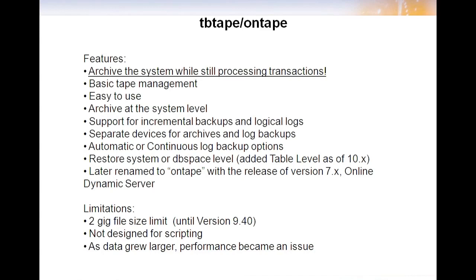The biggest limitations of TBTape were the 2GB file size limit introduced by the OS, it was not designed for scripting and still today is not overly friendly to it, and as data grew larger, performance started to become an issue. When people started talking terabytes, the performance hit TBTape takes became a big problem. So as of version 7, Informix started looking toward other solutions. One way to improve performance would be to parallelize — and that's where OnArchive came in.